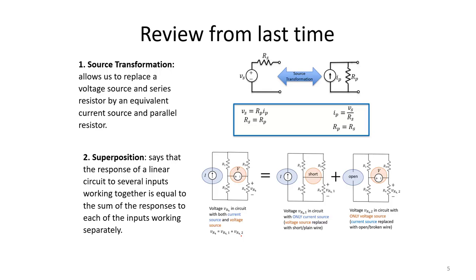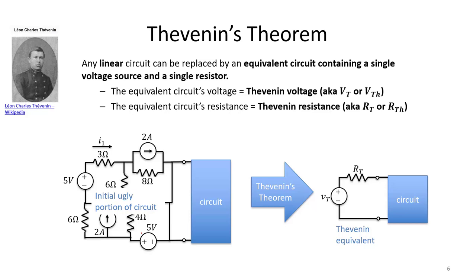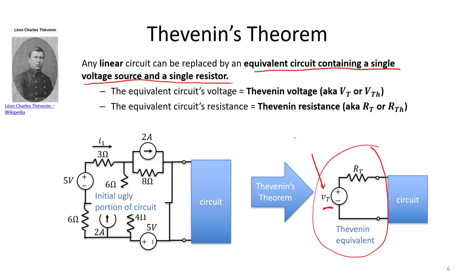From our previous lectures, we covered source transformation and superposition, which allow us to simplify our circuits by replacing sources or considering each source separately. In our previous video, we looked at Thevenin's theorem. By Thevenin's theorem, we can take any linear circuit and replace that circuit with an equivalent circuit containing a single voltage source and a single resistor. That voltage value is called the Thevenin voltage, and the resistance of our Thevenin equivalent circuit is called the Thevenin resistance.